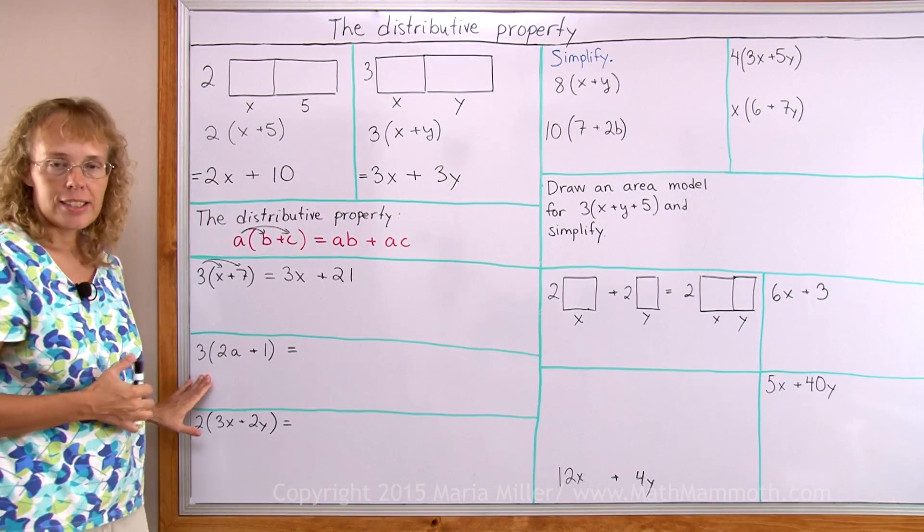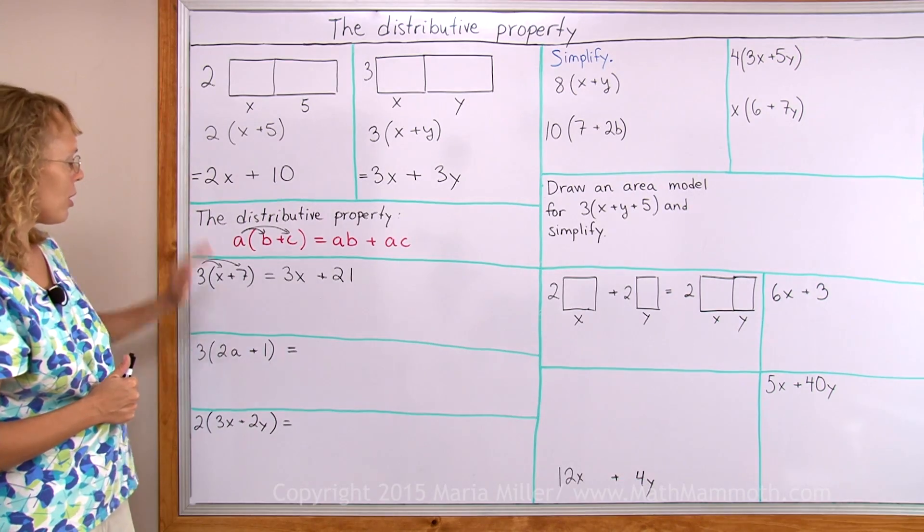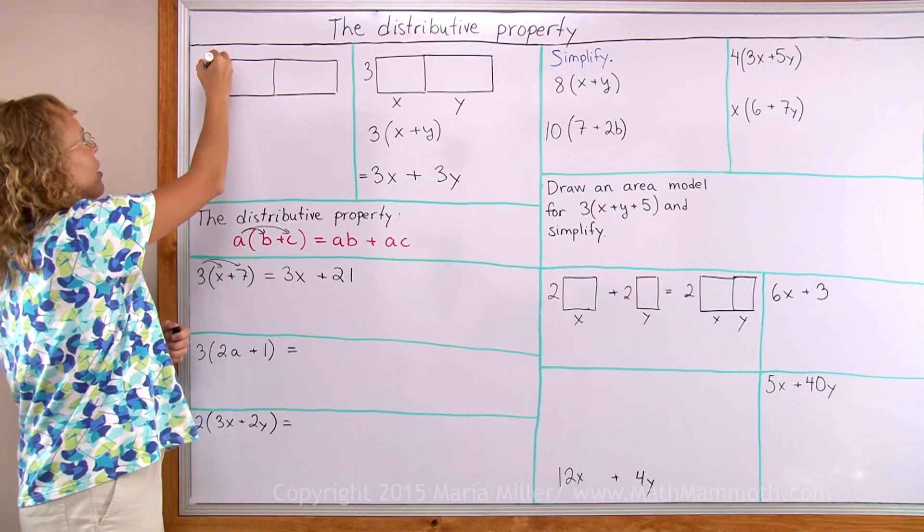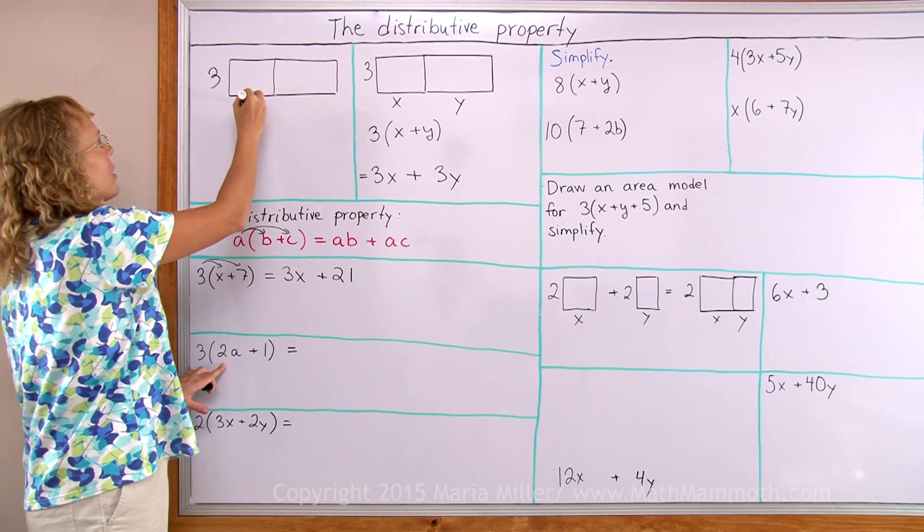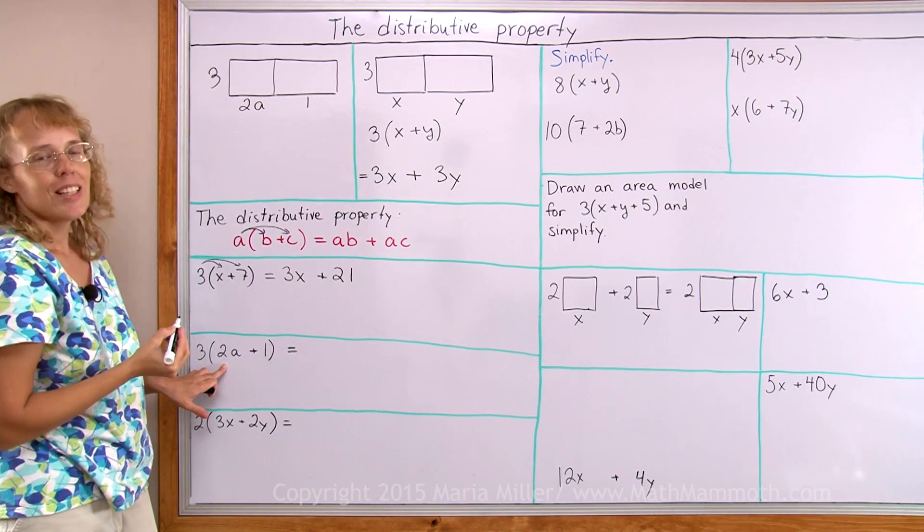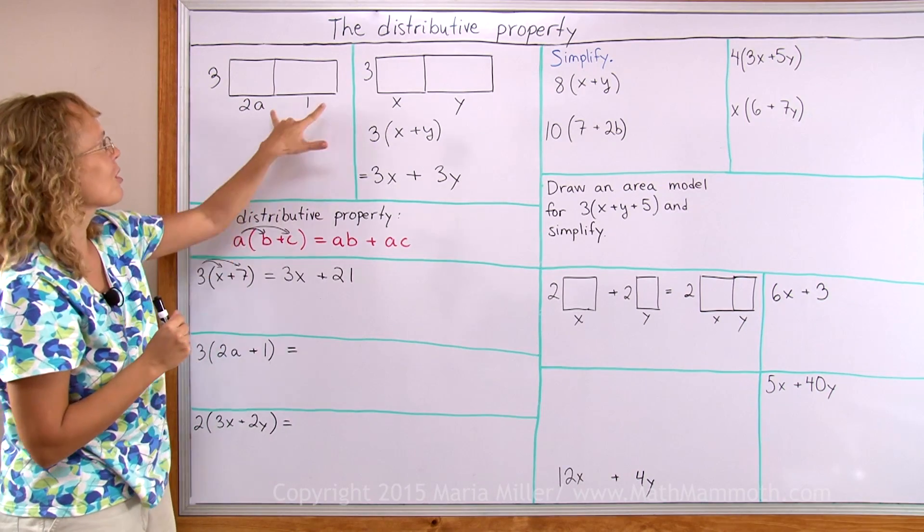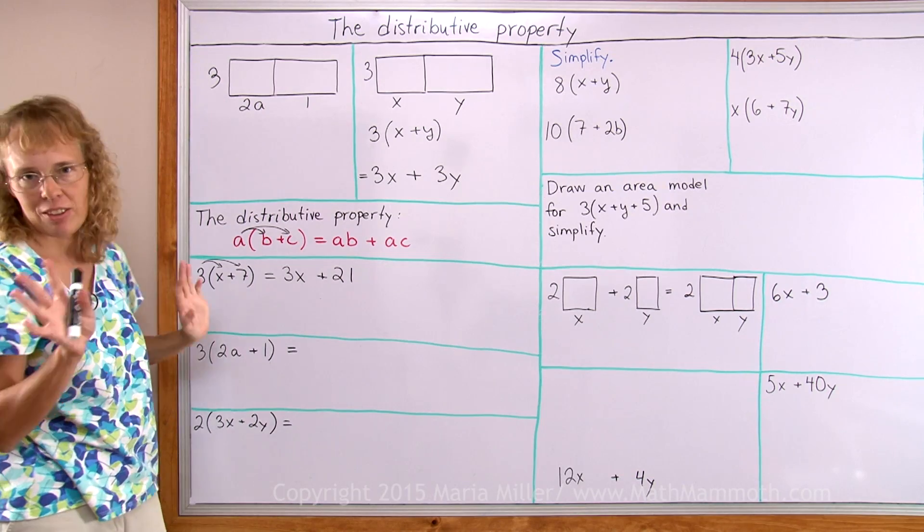Over here the same will happen but I want to actually show it to you here in the area model too. Here the 3 is this number here, this side length here. Now 2a would be this side length and 1 would be this side length. Now the side lengths are not in proportion. Because obviously 1 should not be this long if 3 is this long but ignore that.